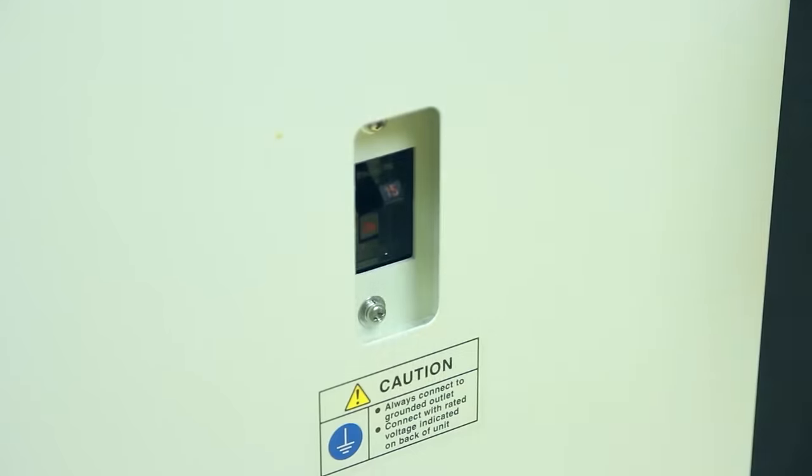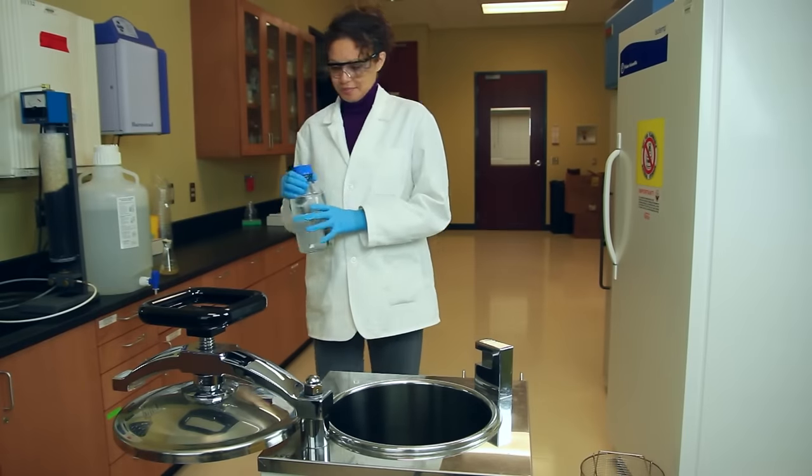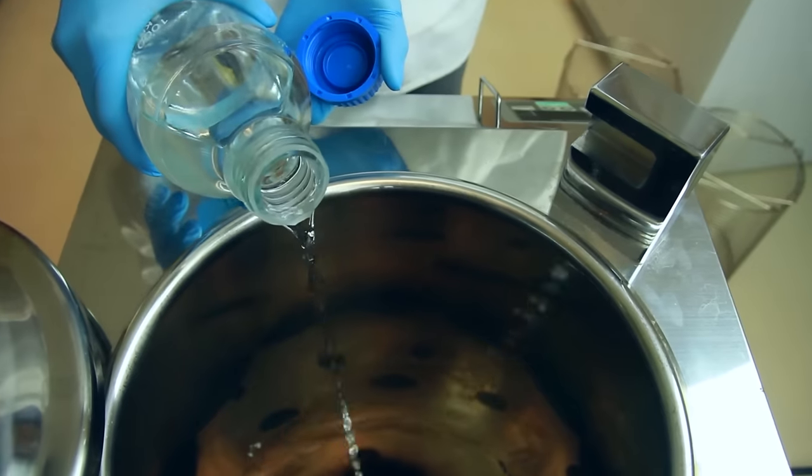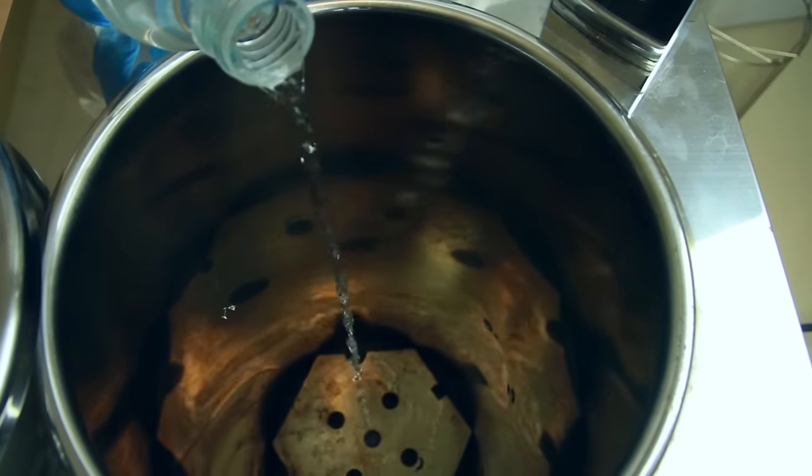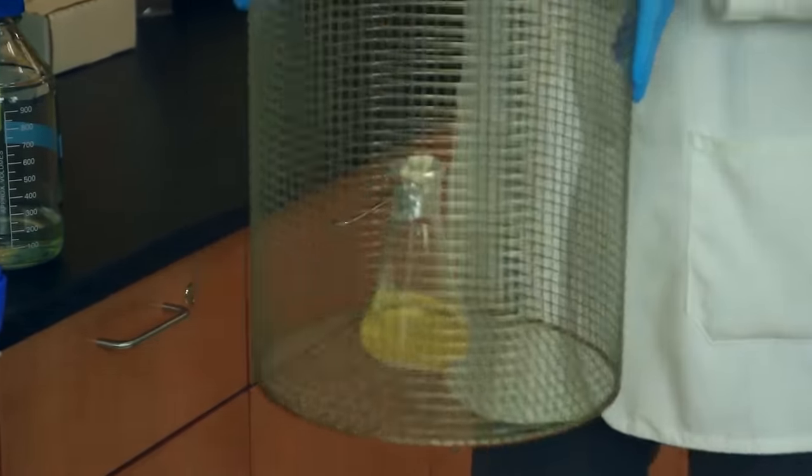Power on the autoclave and make sure the drain valve is closed. Add deionized water to the level indicator line. Place the flask of culture media into the basket. Insert the basket,